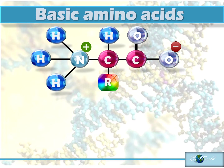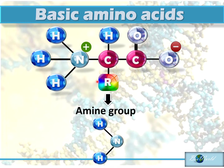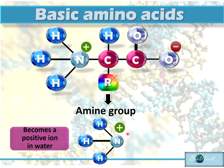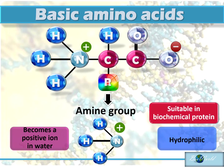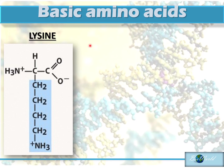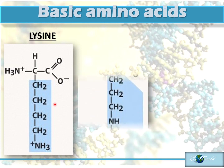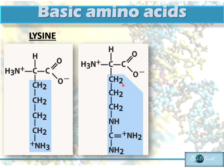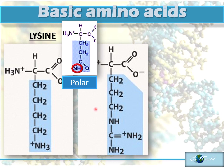The fourth group are the basic amino acids, with side chains made up of the amine group NH2. In an aqueous solution, NH2 pulls another hydrogen ion, making itself become positively charged. So basic amino acids are also hydrophilic and are found in proteins involved in biochemical reactions. Lysine is the simplest basic amino acid — it has a long side chain ending with the positively charged amine group. Another example of a basic amino acid has a long side chain ending with multiple nitrogen molecules. There is also a polar amino acid I introduced earlier that also ended with a nitrogen molecule.